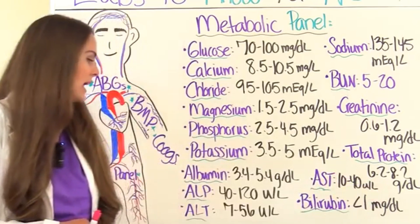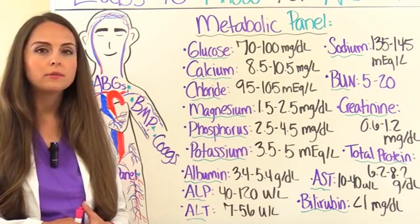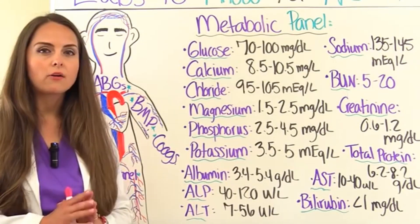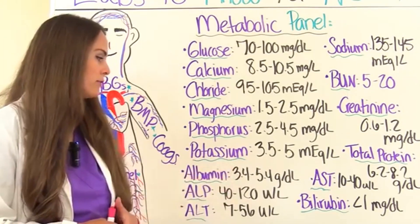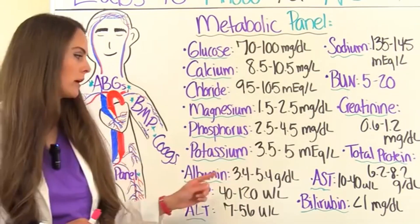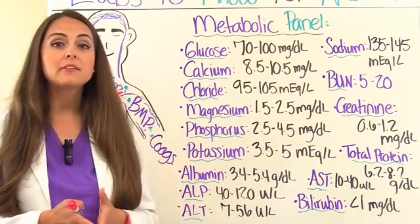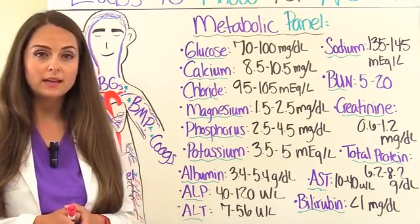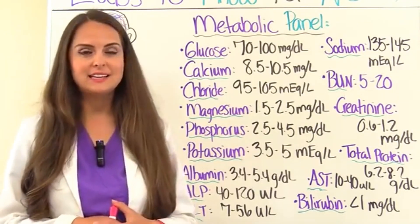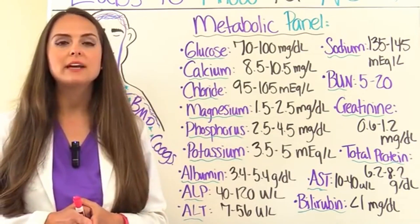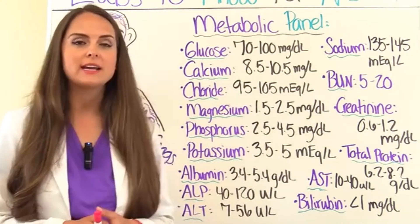Albumin is another protein that plays a huge role in regulating oncotic pressure, with a normal range of 3.4 to 5.4 grams per deciliter. There are also three enzymes found in the liver: ALP, ALT, and AST. If these are abnormal, it could indicate liver disease or some other disease in the body.